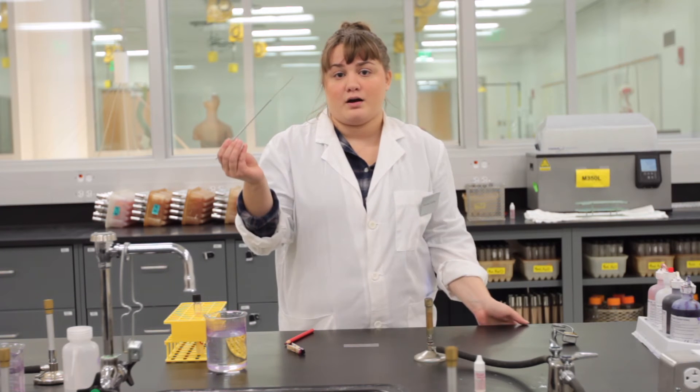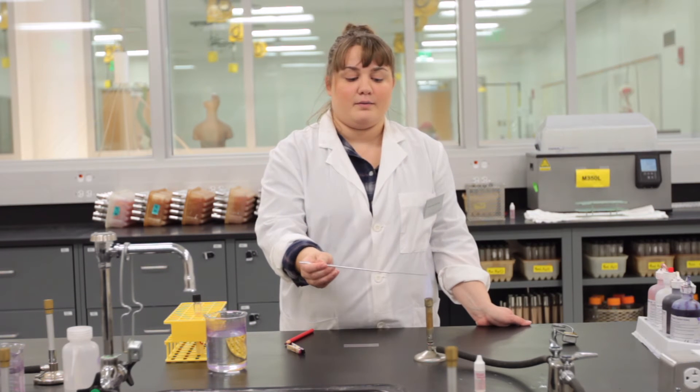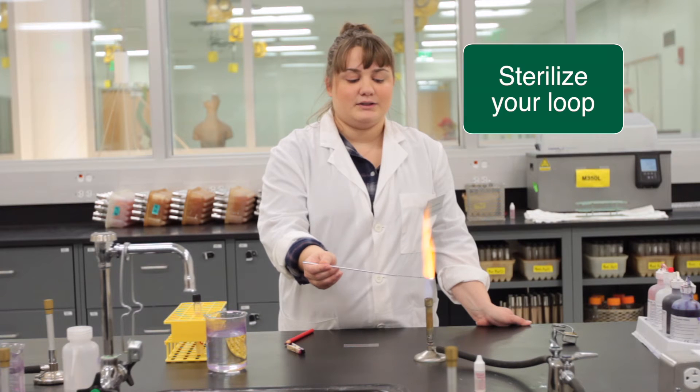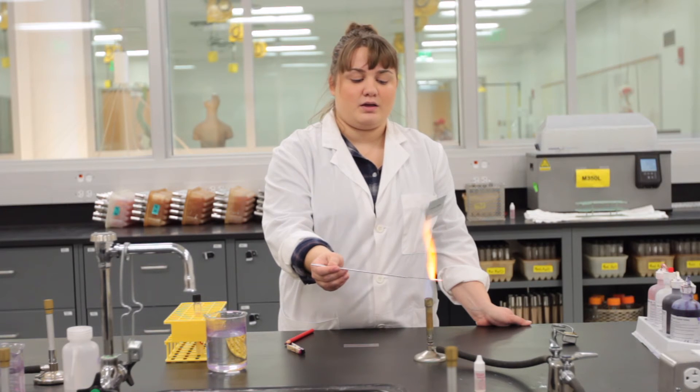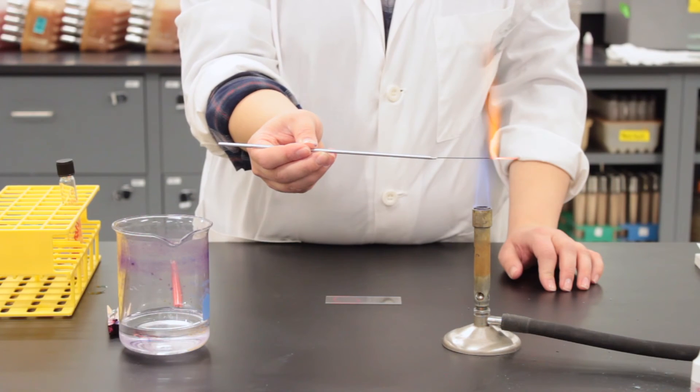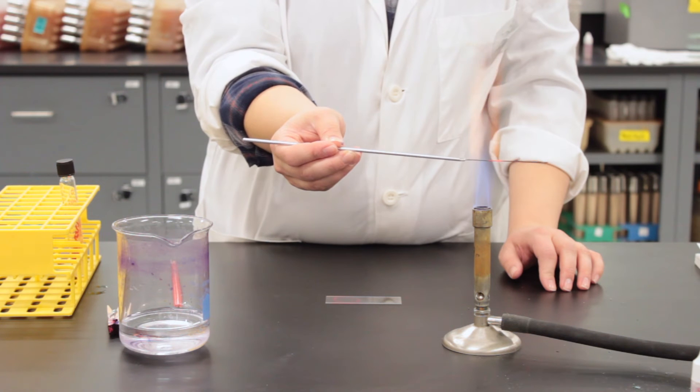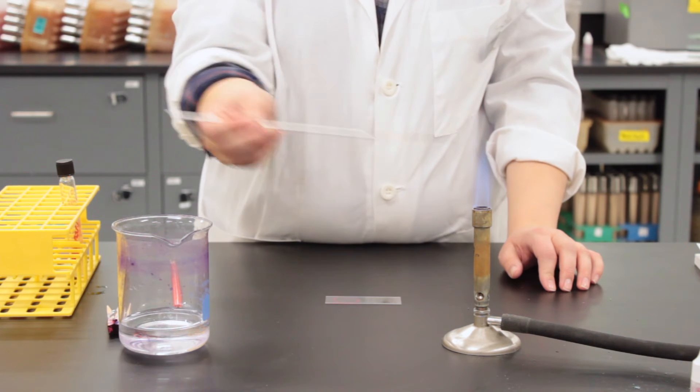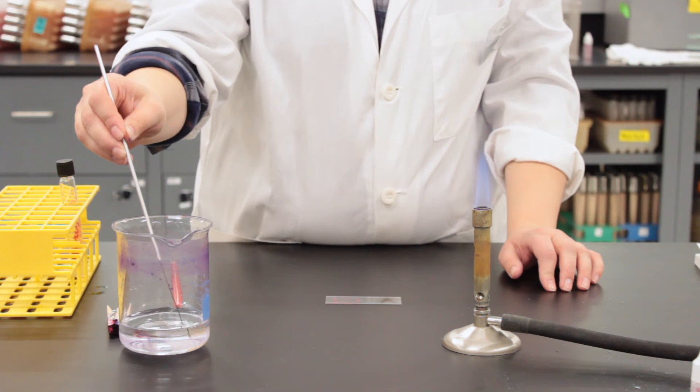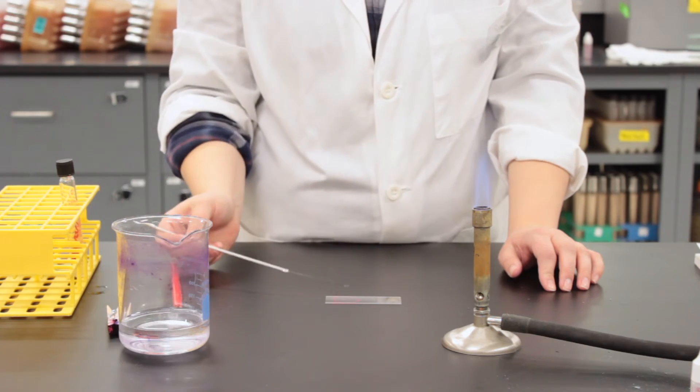We will take our inoculating loop and sterilize it. Make sure that the inoculating loop is completely sterilized, and then you will go to your water. Take a drop of water and put it in the center of the circle.